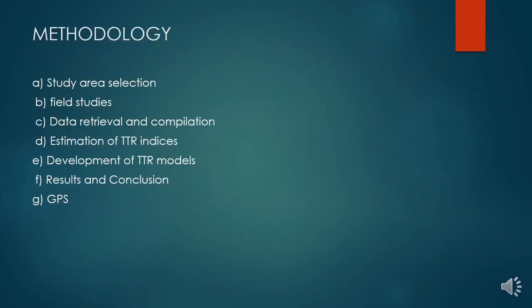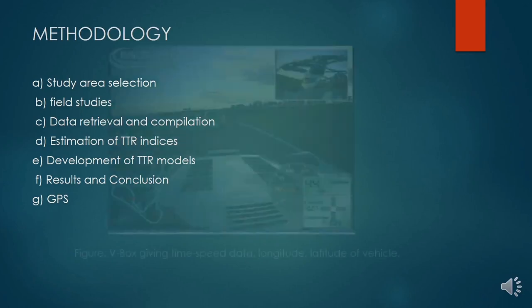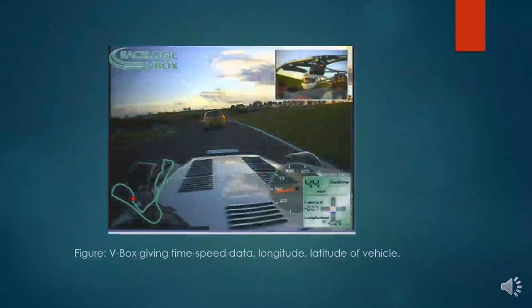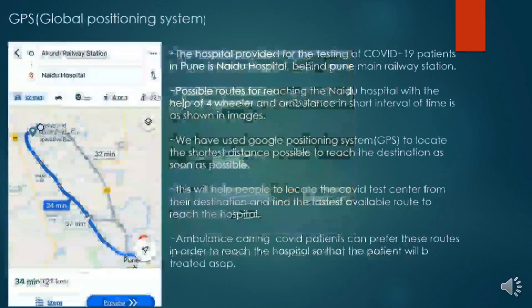The methodology consists of studying area selection and estimation of TTR indices to provide statements, and GPS plays an important role in this project. This is a picture that represents a V-box recording. This instrument gives us very precise time and speed data along with longitude and latitude of the vehicle.